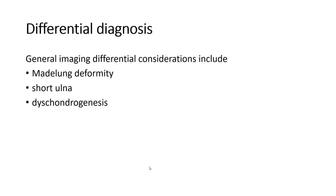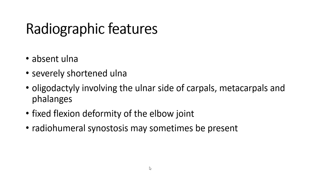General imaging considerations include: midland deformity, subluxation, radiocarpal genesis. On radiograph, the ulna may be completely absent or severely shortened, with only a rudimentary element. Signs of carpals, metacarpals, and phalanges with fixed flexion of the elbow joint and radial-ulnar synostosis may sometimes be present.